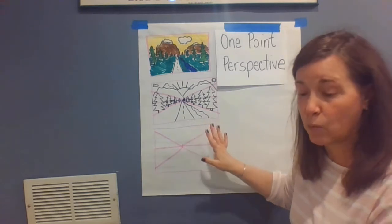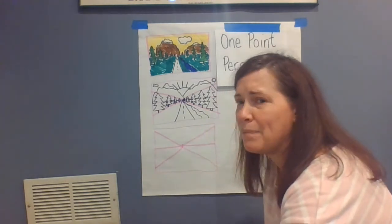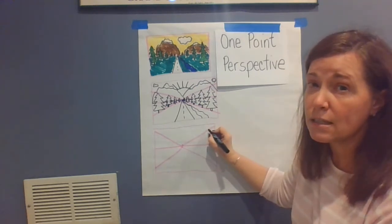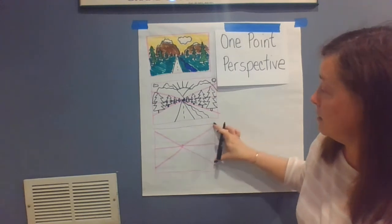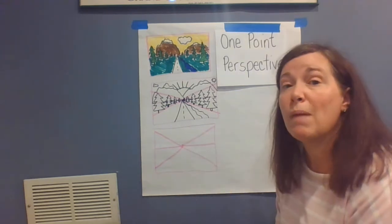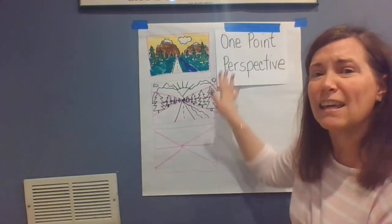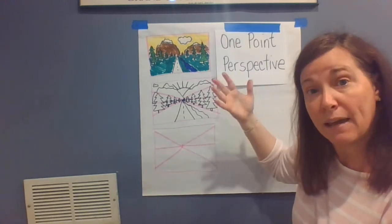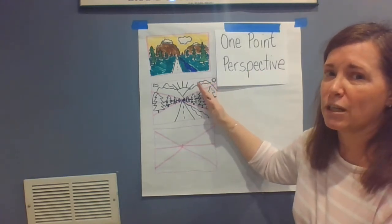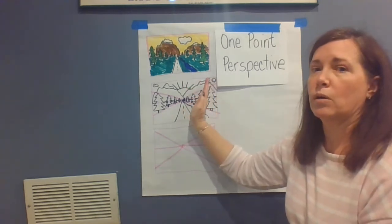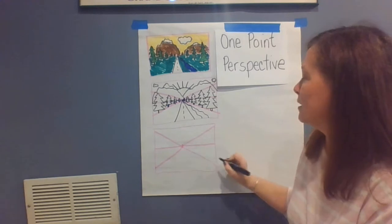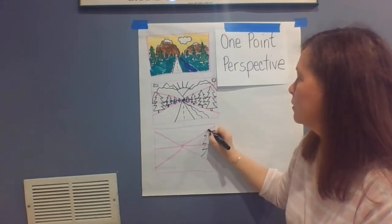I drew them with the pink marker because we're not going to want to see those lines when our drawing is over. The next thing is to work on our trees. These lines show us where the top of the tree is and where the bottom of the tree is. Since these two lines make a triangle that disappears, you can see they're going to start out big and get smaller. Something really important to remember: anything in your picture that is straight up and down in real life is going to stay straight up and down in your picture. Sometimes people's eyes trick them and they make their trees lean over. Make your trees go straight up and down. We're going to start at the top of that pink line a little bit in and make our first tree.